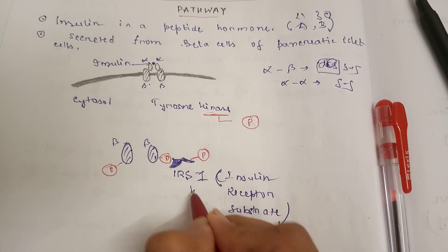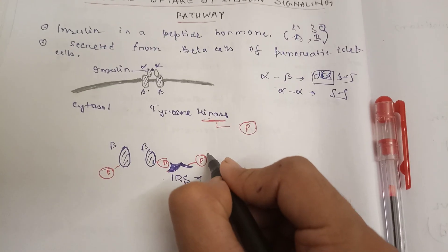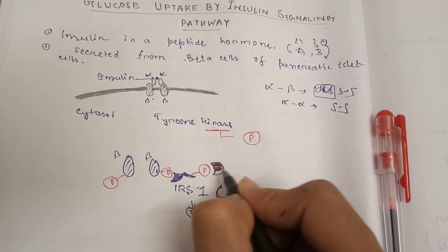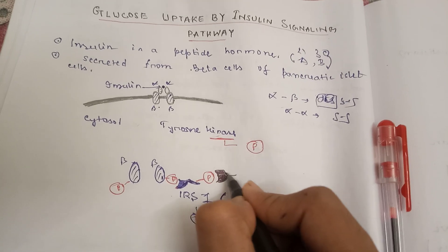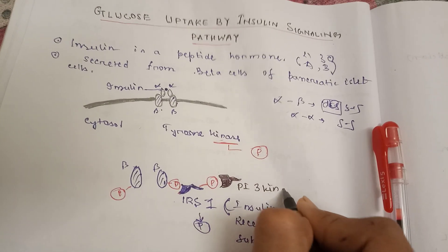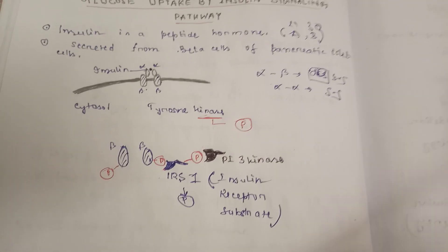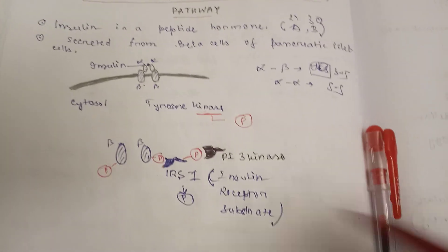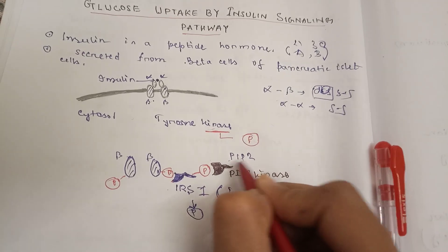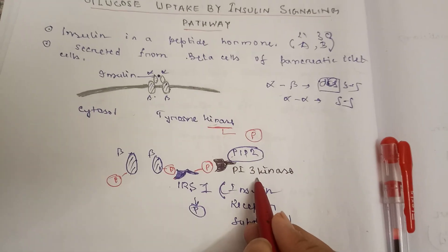Now the IRS-1 is phosphorylated. This phosphorylated part of IRS-1 will serve as a binding site for PI3 kinase. As mentioned, kinase means it will phosphorylate something, so PI3 kinase will phosphorylate a membrane lipid.